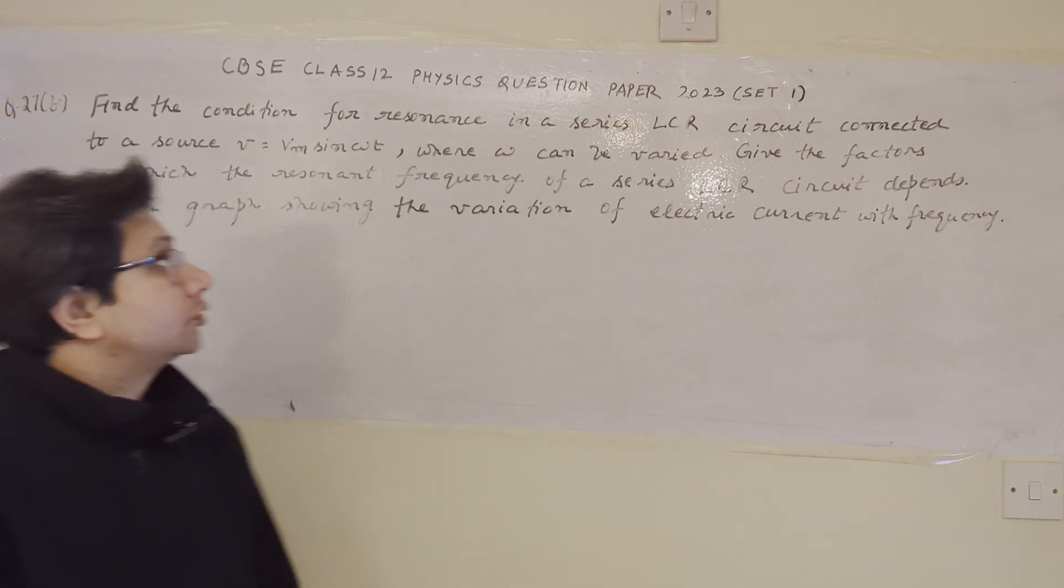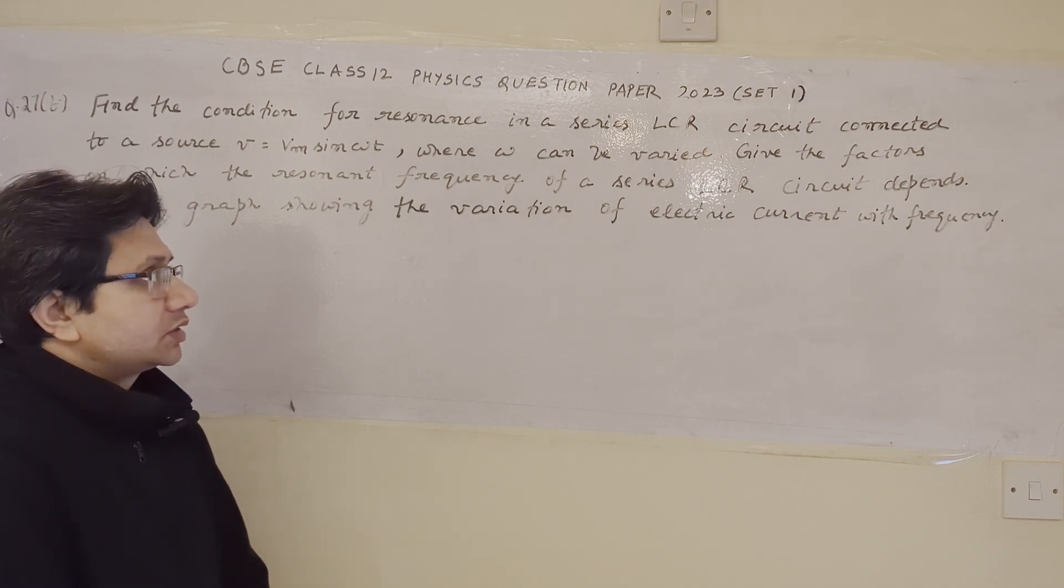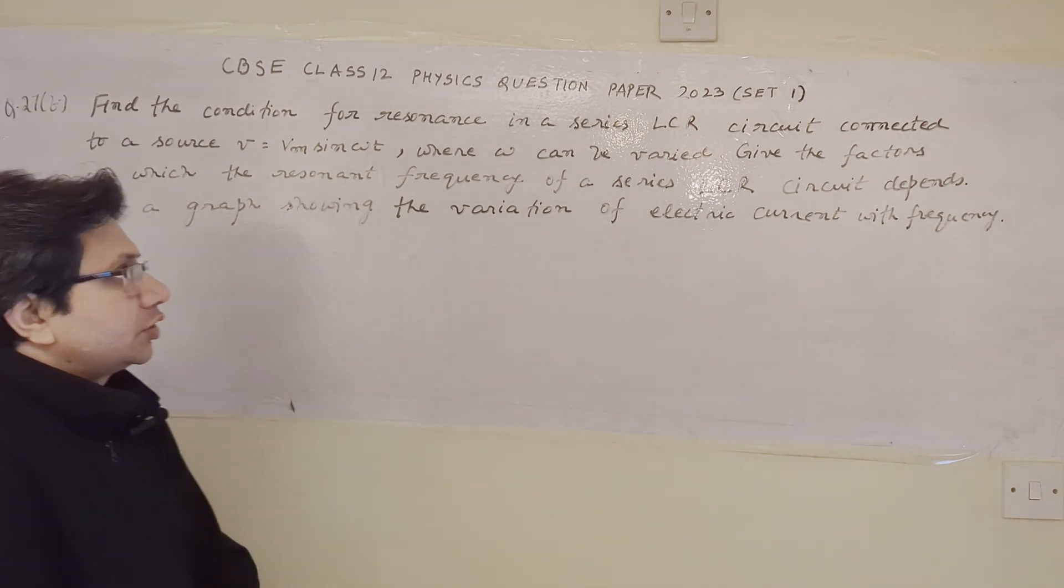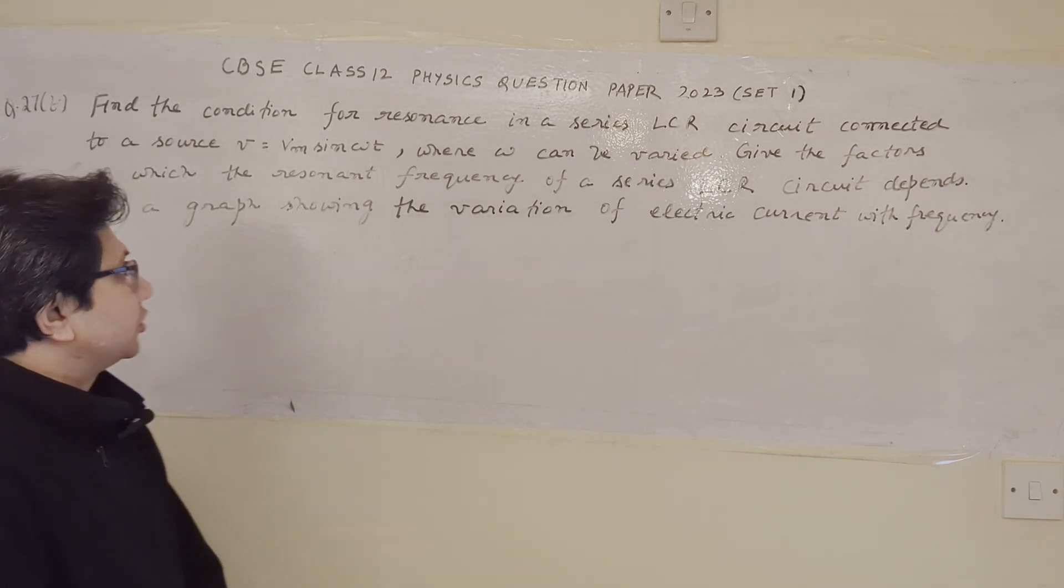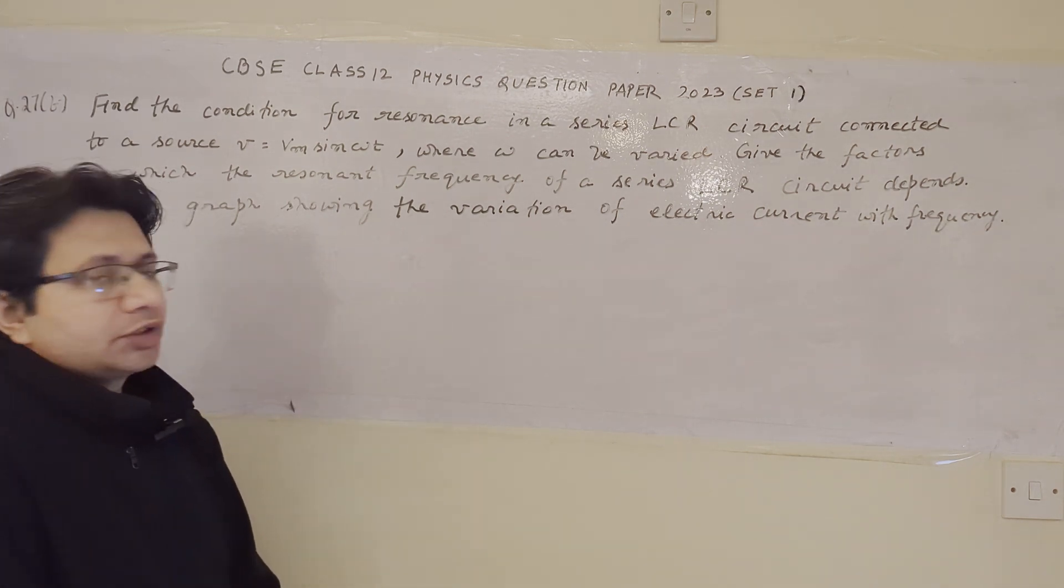Hello students, the question is, find the condition for resonance in a series LCR circuit connected to a source V equals 2Vm sin omega t where omega can be varied, give the factors on which the resonant frequency of a series LCR circuit depends and plot a graph showing the variation of electric current with frequency.